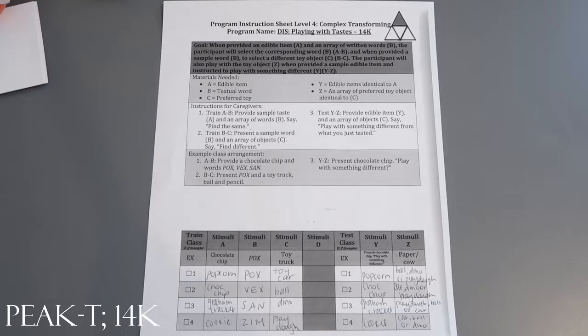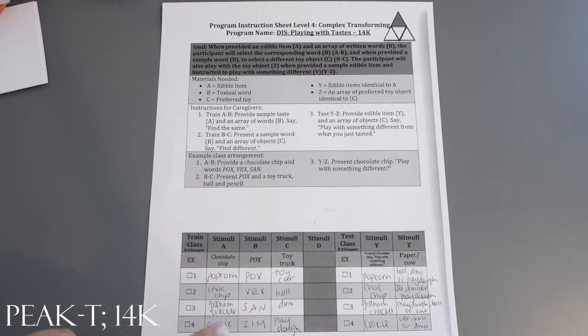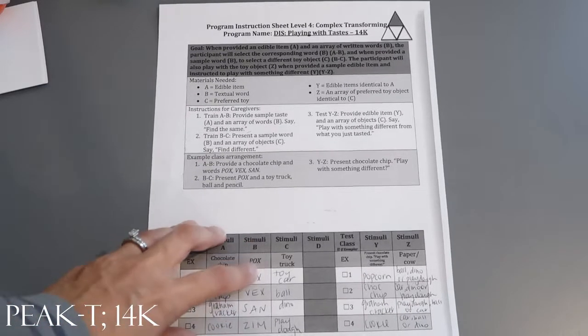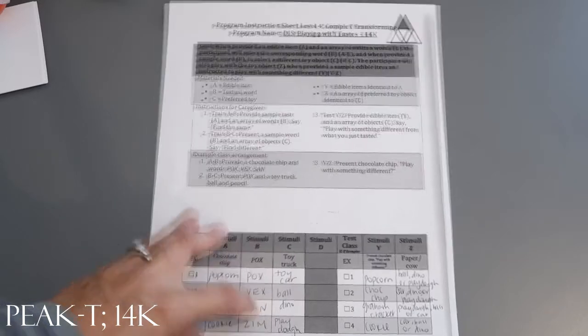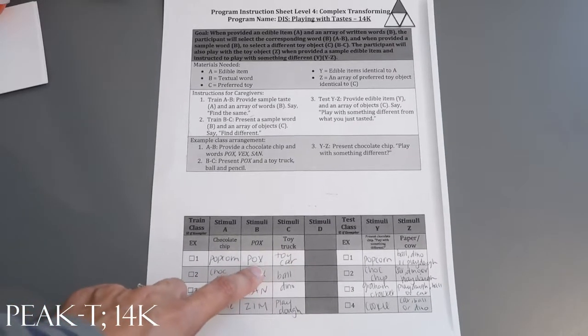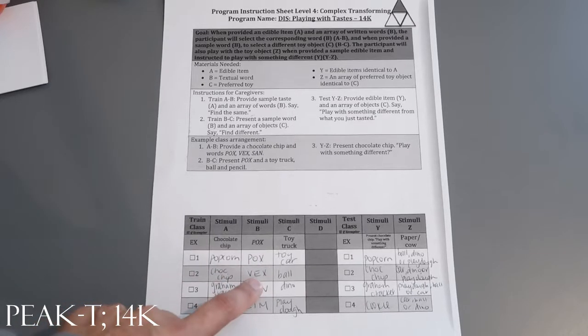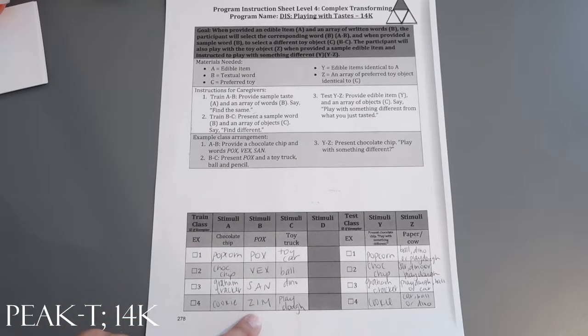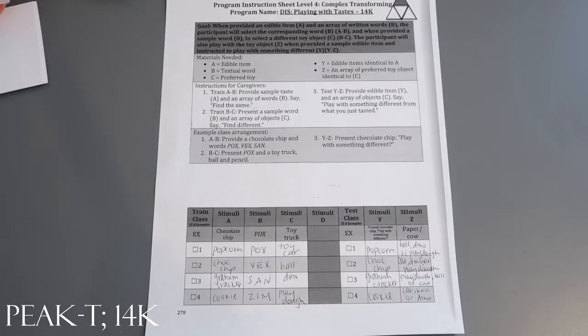There's three steps to it. For step one, you're going to train A to B. You're going to provide the taste and these flash cards and say 'find the same.' If they taste popcorn they would pick POX, if they tasted chocolate chip they would pick VEX, graham cracker - SAN, and cookie equals ZIM. That's how you would train A to B. You would prompt, reinforce, praise for that process.